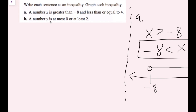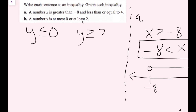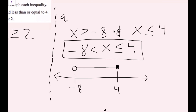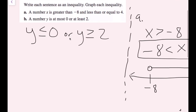For part B, we have a number Y is at most 0 or at least 2. Y is at most 0 means Y ≤ 0. Or, Y is at least 2, meaning Y ≥ 2. This is an OR statement, which means only one needs to be true, so we leave it as OR. For AND statements we can combine them into one inequality, but for OR statements we just leave it as OR.